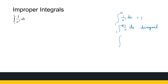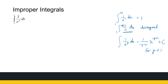Let's look at the general antiderivative of 1 over x to the power p dx. When p is equal to 1, the antiderivative is ln x. But if p is not equal to 1, the antiderivative is 1 over (minus p plus 1) times x to the power (minus p plus 1) plus c. That's the power rule that gives us the antiderivative.